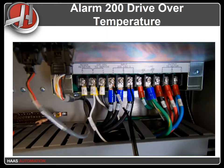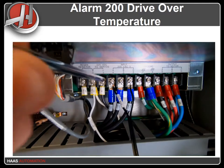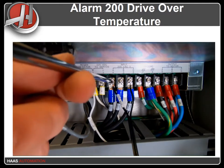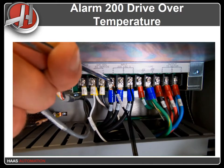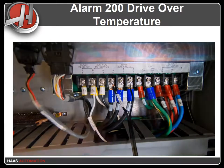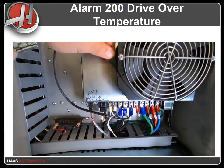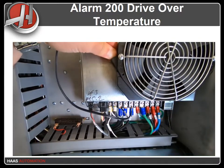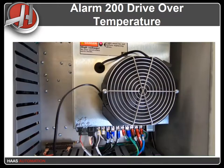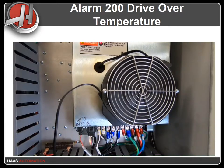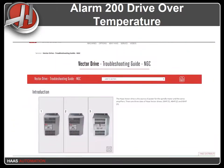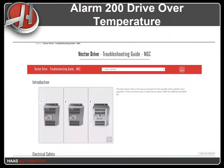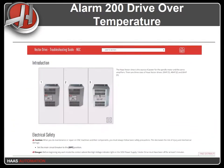If you do not have a spare fan, another method to check the fan is to connect the fan directly to the Vector Drive. Using a spare fan cable, connect the leads to the 240 volt AC input supply voltage A and C terminals. Turn on the machine. If the fan turns on immediately and at a normal speed, then the Vector Drive is faulty. For more information on troubleshooting the Vector Drive, refer to the troubleshooting guide on our website.